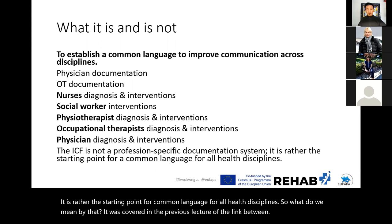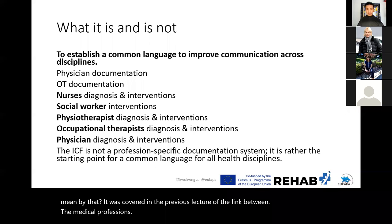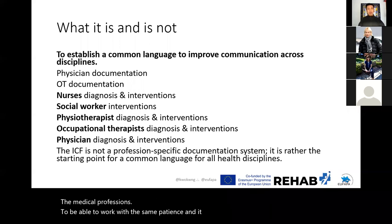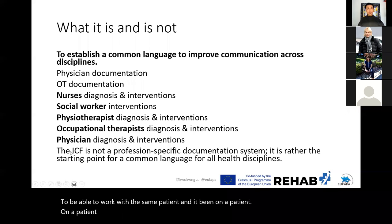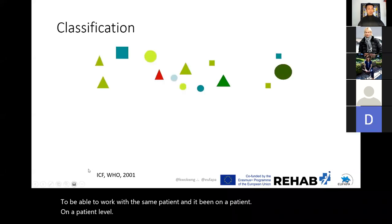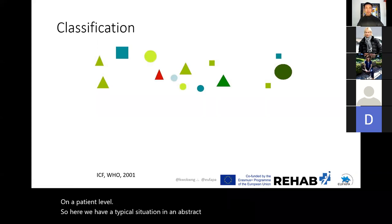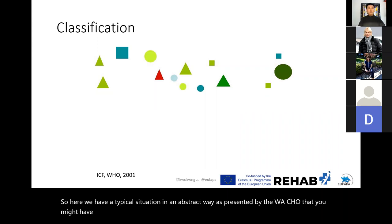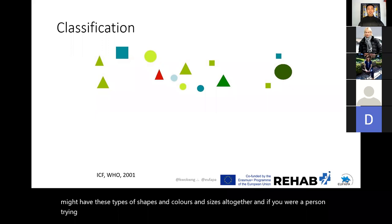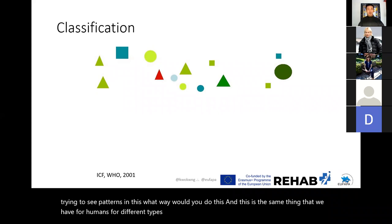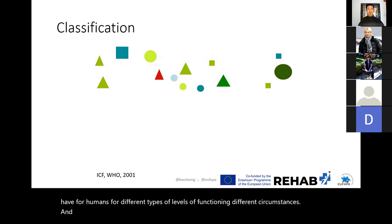What we mean by that was covered in the previous lecture — the link between medical professions to work with the same patient on a patient level. Here we have a typical situation in an abstract way as presented by the WHO: you might have shapes, colors, and sizes all together, and if you were a person trying to see patterns, this is the same thing we have for humans with different levels of functioning, different circumstances, and different types of willingness to do things.